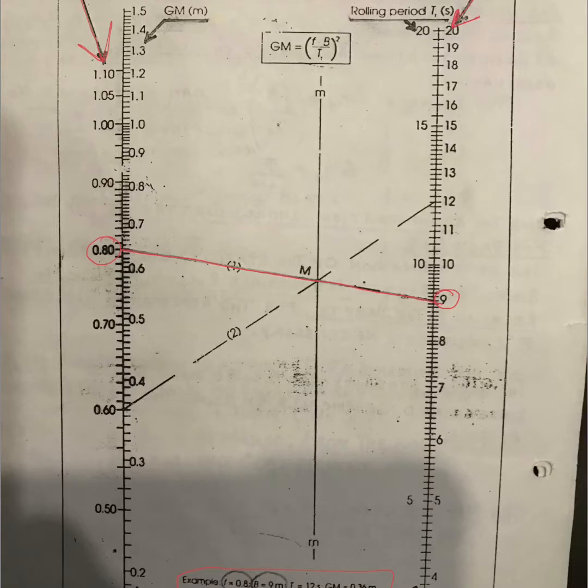Wherever it intersects the center line M, through that what they do is they plot the rolling period which in this case is 12 seconds. So rolling period is 12 seconds here. From the rolling period they draw a line which intersects this point here on M.